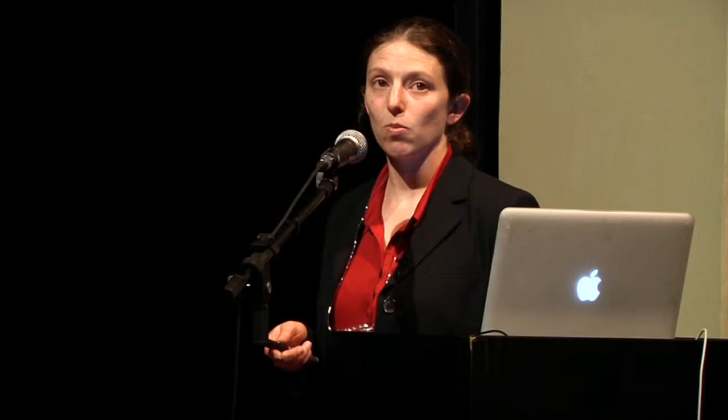When they dove into these SNPs to figure out where they were located, they found four independent SNPs that explained 19% of the control. One was located 35 kilobases upstream of HLA C associated with expression levels — the same one described earlier. They also found a SNP proxy for HLA B5701 and a couple of other SNPs in the HLA as well. Including CCR5 polymorphisms, 23% of HIV control can now be explained by these SNPs in the HLA and those in CCR5.